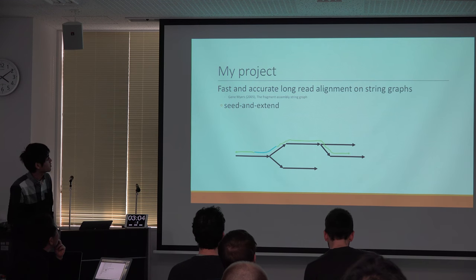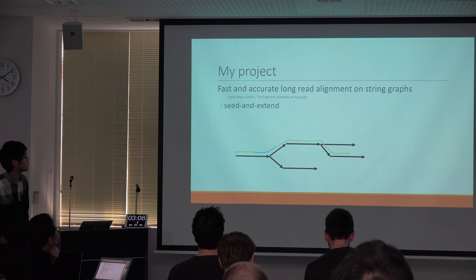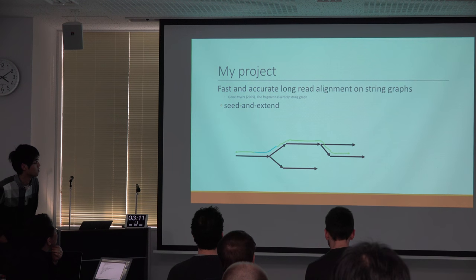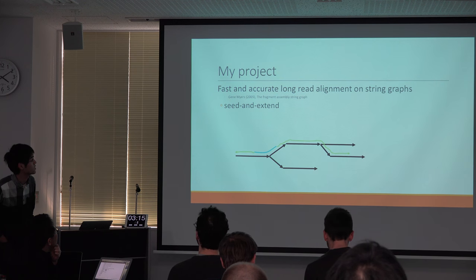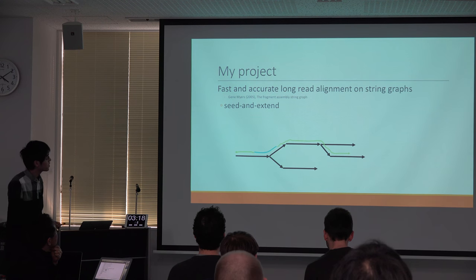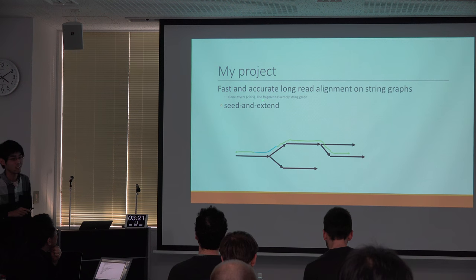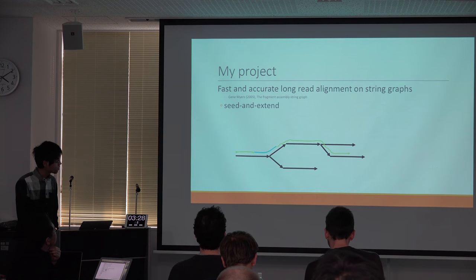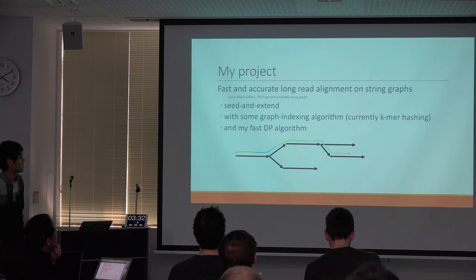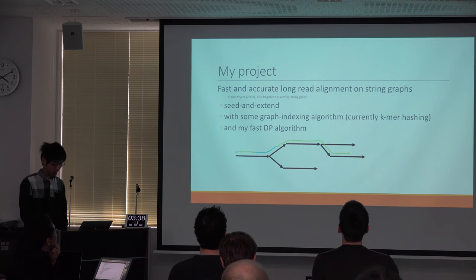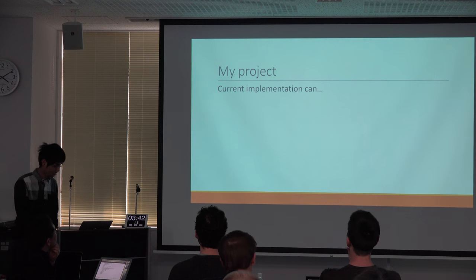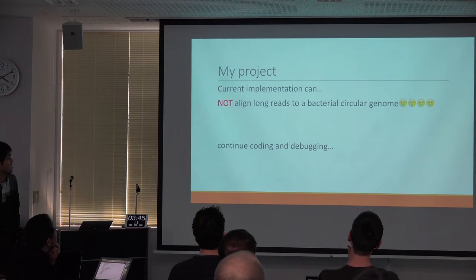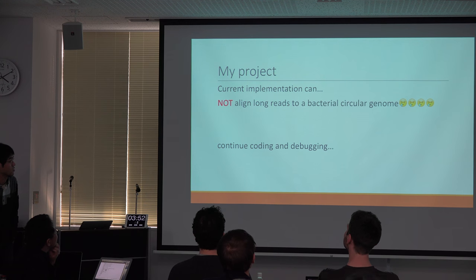My current project is developing fast and accurate long-read alignments on string graphs — string graphs like Meijer's — using a seed-and-extend method with some graph indexing algorithms and my first DPR algorithm. The current implementation can already align long reads to bacterial circular genomes, but a lot of bugs remain.